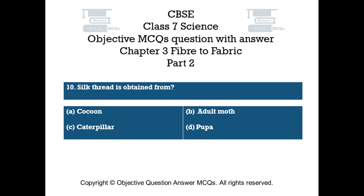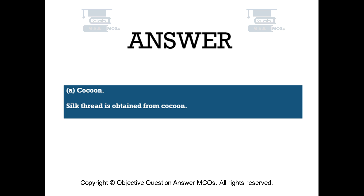Question number 10. Silk thread is obtained from. Option A: Cocoon. Option B: Adult moth. Option C: Caterpillar. Option D: Pupa. The right answer is Option A — Cocoon. Silk thread is obtained from cocoon.